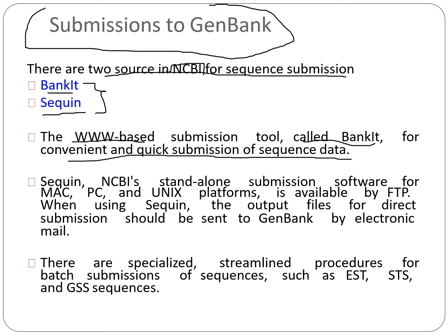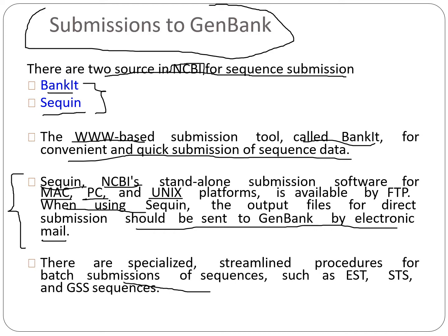BankIt is the www-based submission tool for convenient and quick submissions of sequence data. Sequin is NCBI's standalone submission software for Mac, PC, and Unix platforms, available by FTP. When using Sequin, the output files for direct submission should be sent to GenBank by electronic mail. There are also specialized streamlined procedures for batch submissions of sequences such as ESTs, STSs, and GSS sequences.